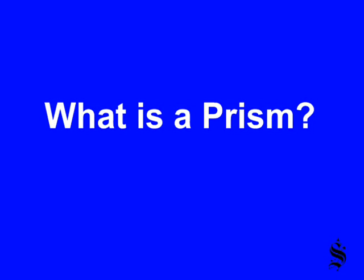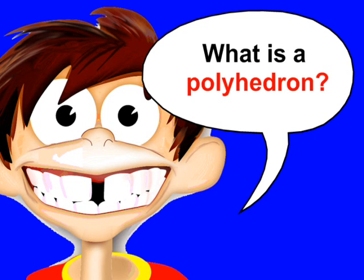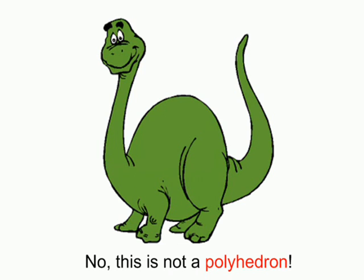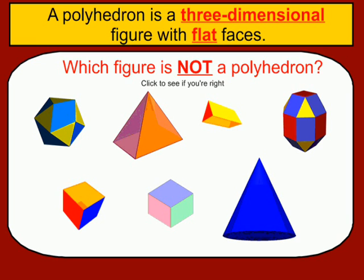What is a prism? Well, first we have to answer the question: what is a polyhedron? This is definitely not a polyhedron. A polyhedron is a three-dimensional figure with flat faces.